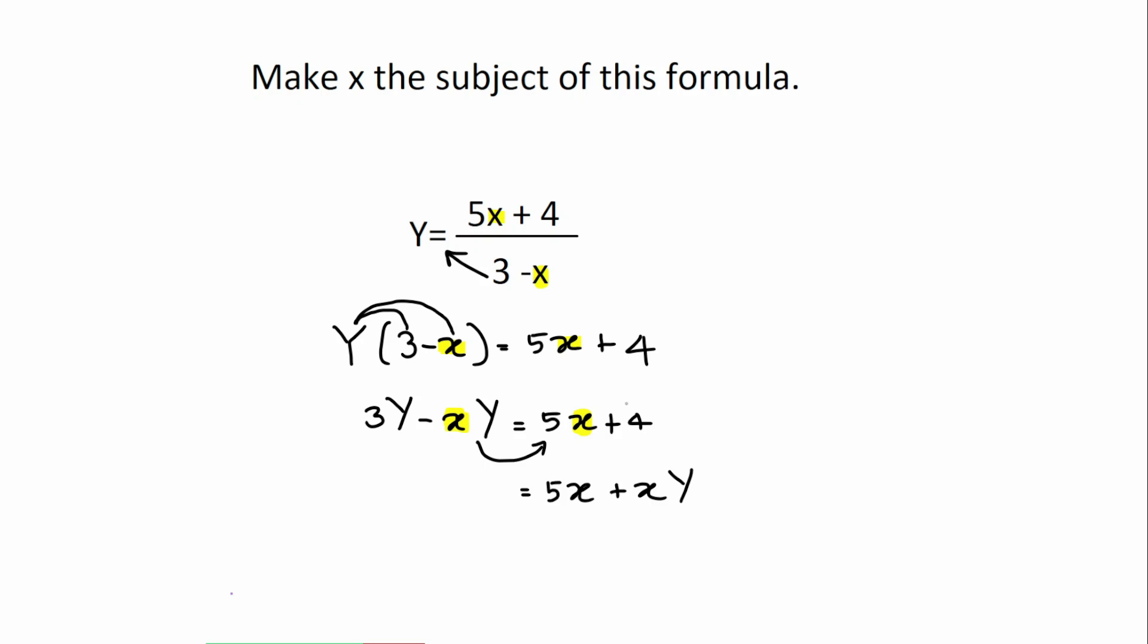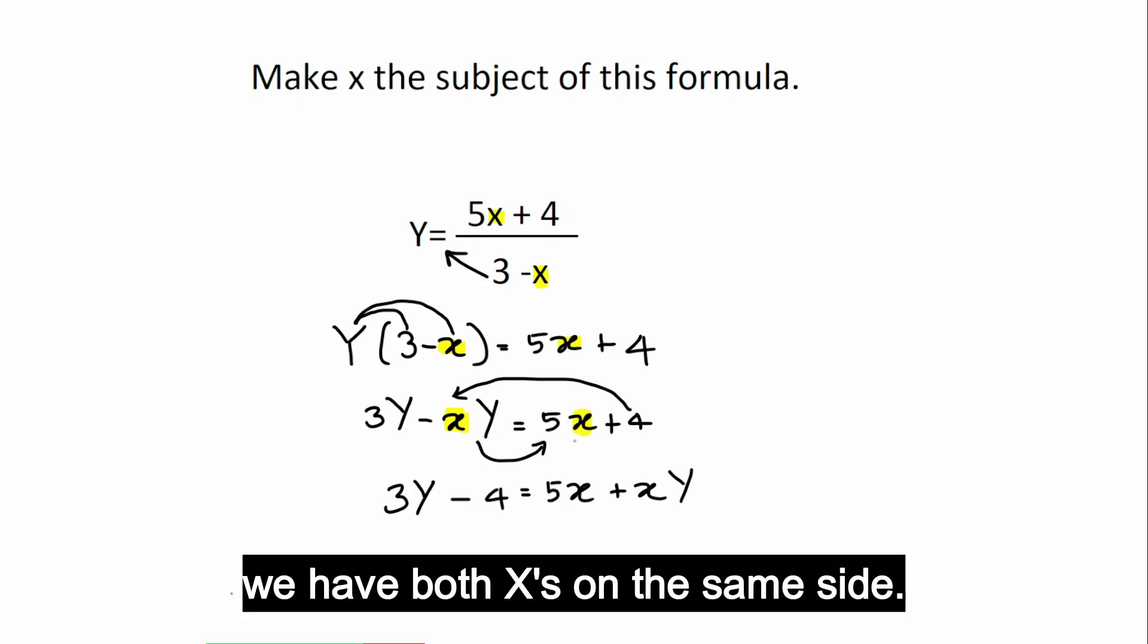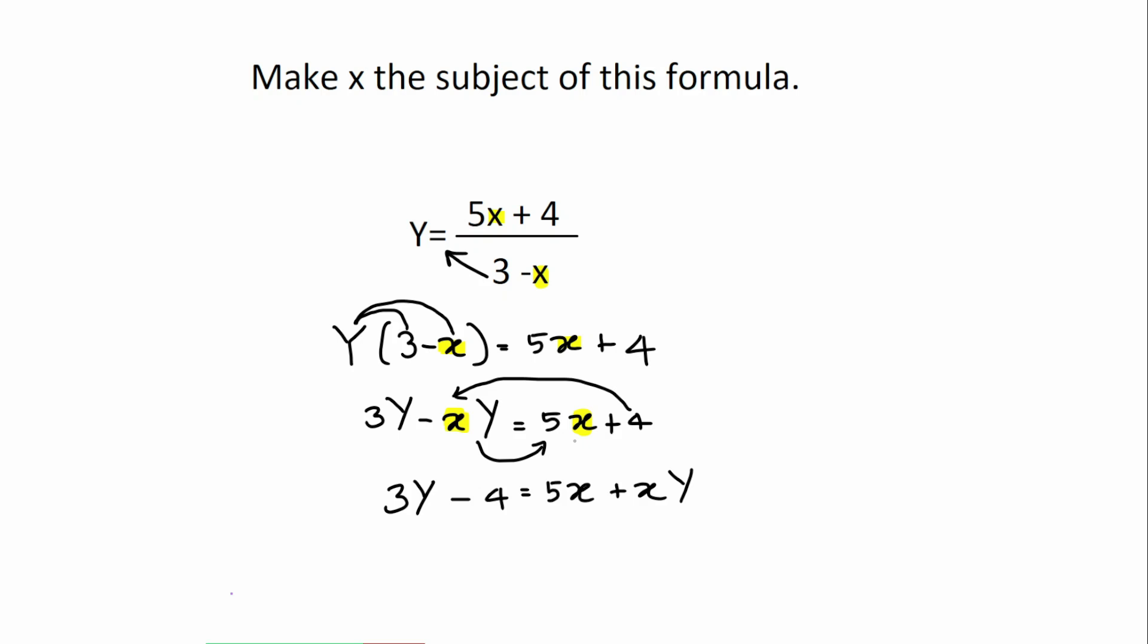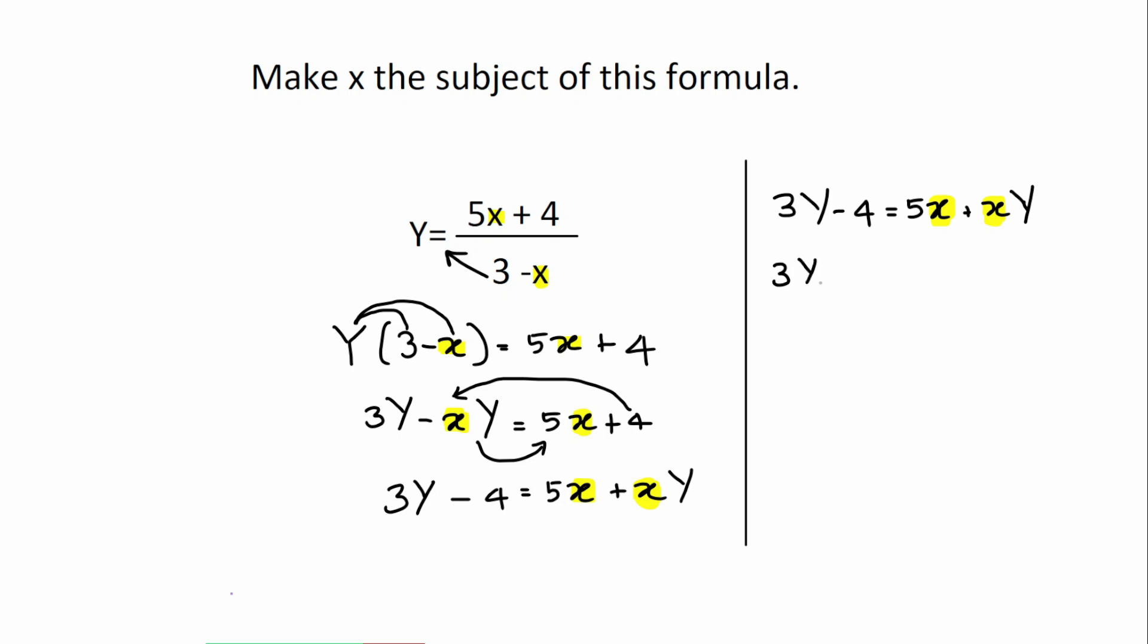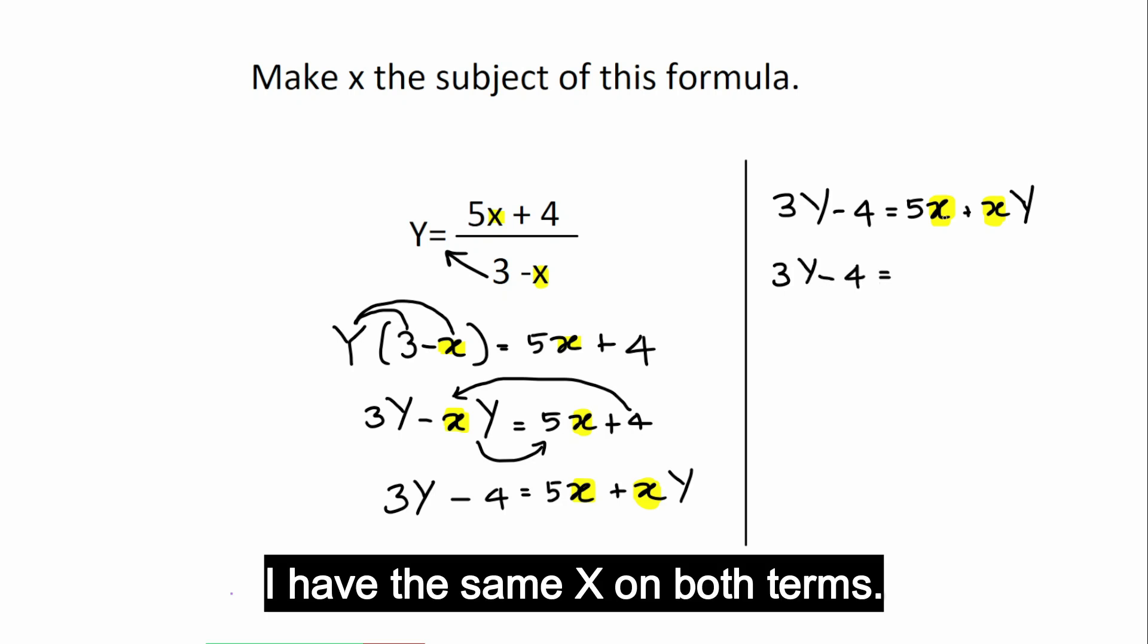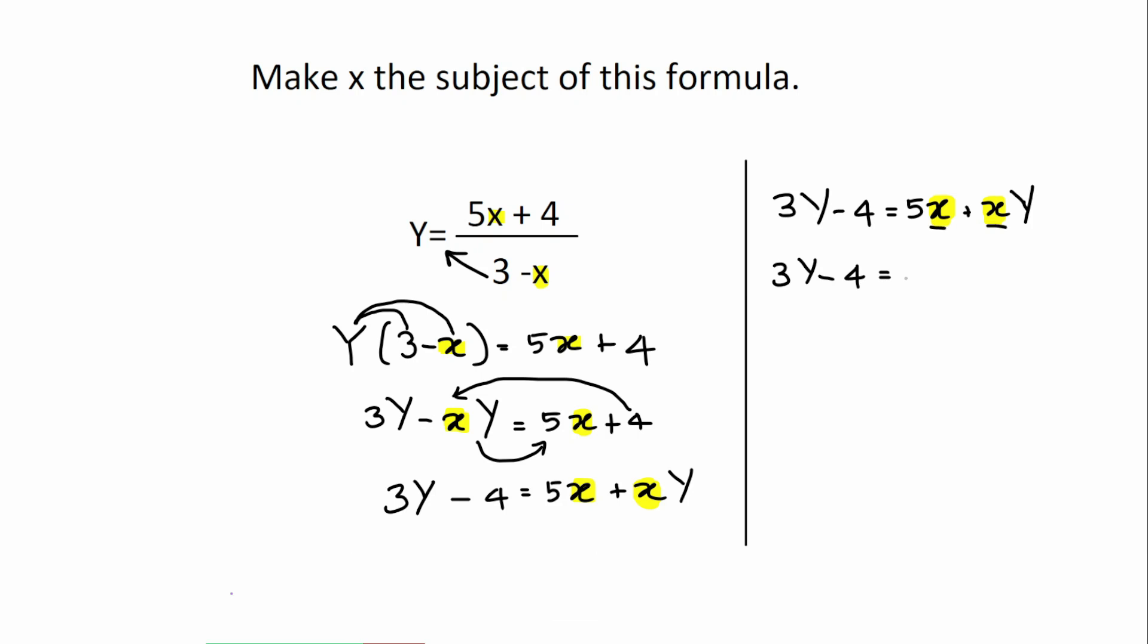Now, this 4, I need to bring to this side here. So, 3 capital Y remains here. This add 4 becomes take away 4 is equal to 5x at xy. Now we have both x's on the same side. This is the important step here. The left-hand side is 3y take away 4 is equal to, now I have the same x on both terms. I can factorize the x out.